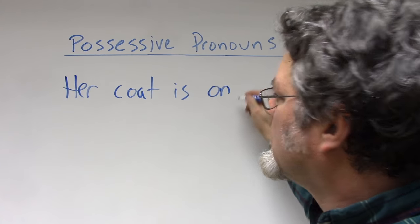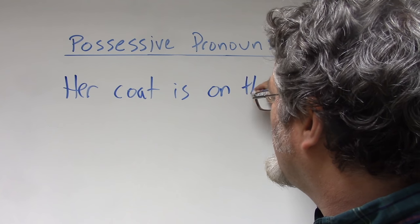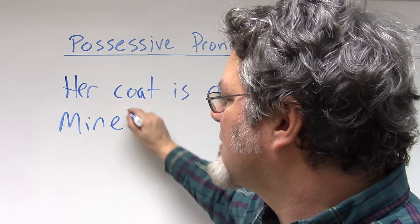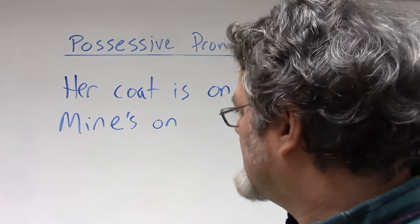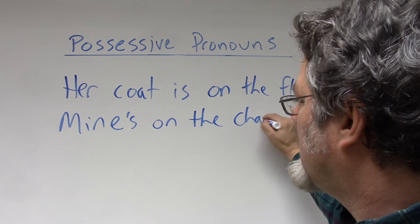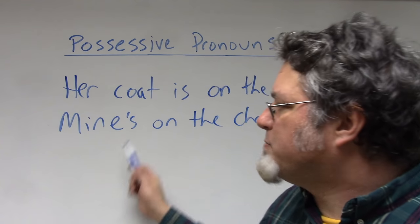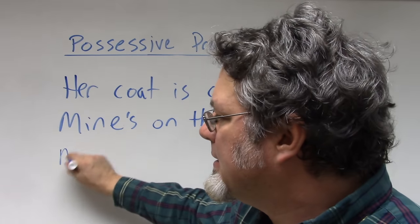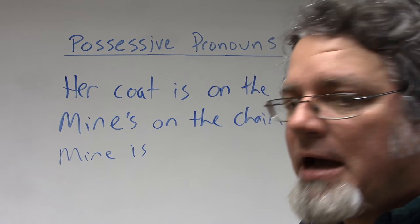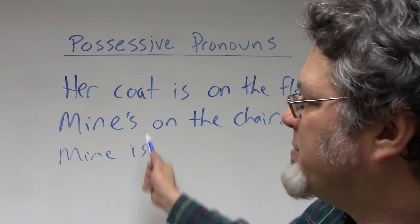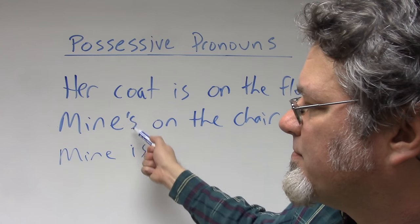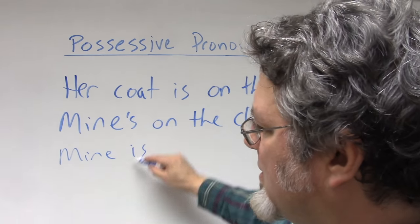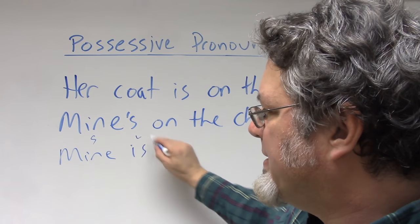'Her coat is on the floor. Mine's on the chair.' So it is possible to put an S on 'mine,' but then this is a contraction for 'mine is.' 'Mine is on the chair.' You will hear people use this contraction, but remember that the reason it exists is that 'mine' is the subject and 'is' is the verb.